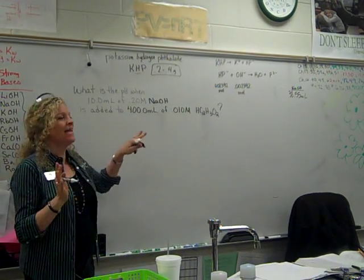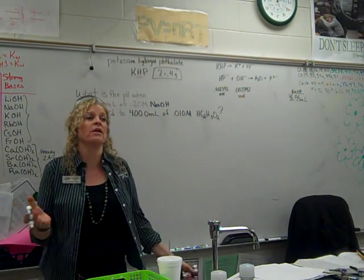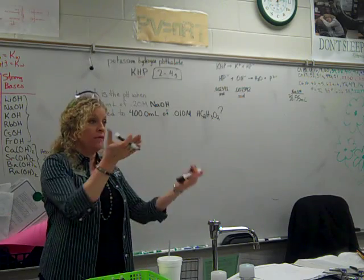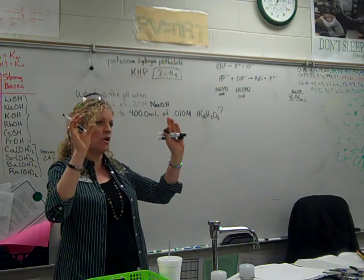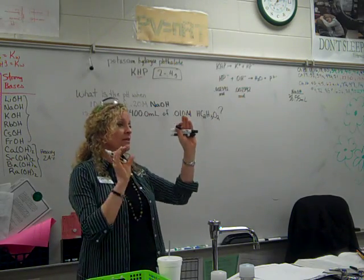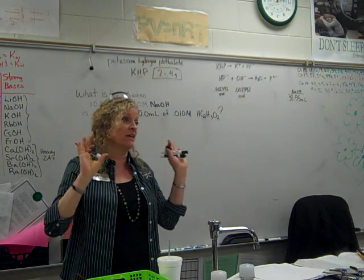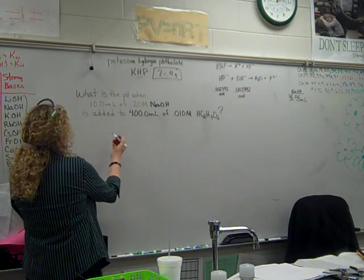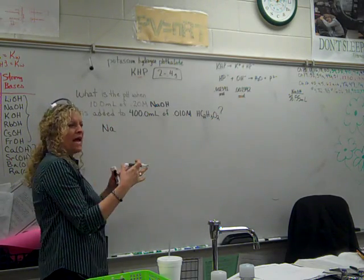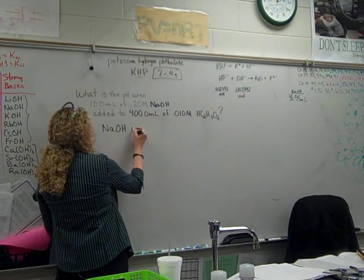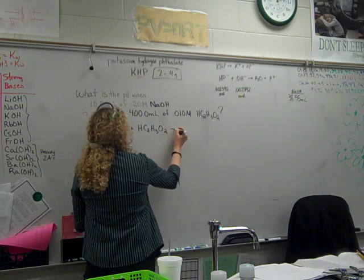We're going to be adding a strong base and a weak acid. What happens when an acid and a base go together? They neutralize. It doesn't matter whether it's a strong acid and a strong base, strong acid and a weak base, strong base and a weak acid, or a weak and a weak — it will neutralize. That's your priority reaction: neutralize everything you can, and then if there's stuff left over, we see what happens.